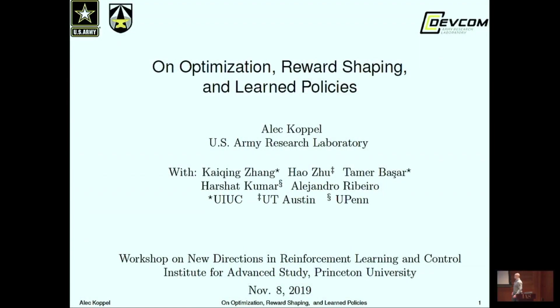Thanks everyone for still paying attention on Friday afternoon. I'm Alec Koppel, at the US Army Research Laboratory. I tried to remove most of the math I could from this talk. I'm going to overview a few recent results: a numerical optimization study of policy gradient methods and actor-critic in continuous spaces in the canonical infinite horizon discounted problem. This is joint work with Kai Ching and Tamer Bashar at University of Illinois, Hau at UT Austin, Harshat, and my former PhD advisor Alejandro Ribeiro at UPenn.